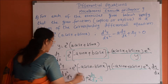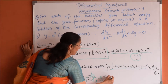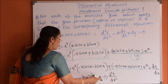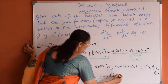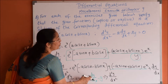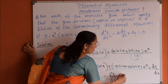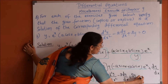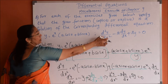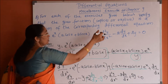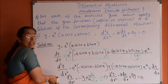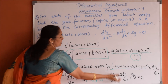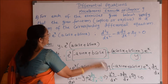Rearranging the terms, we get d square y by dx square minus 2 dy by dx plus 2y is equal to 0. That is the differential equation. By differentiating and rearranging the terms, we are able to find the differential equation for the given equation.